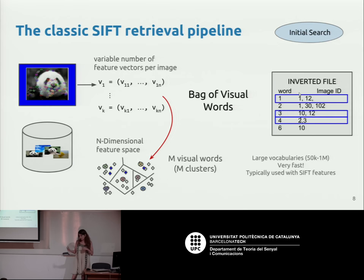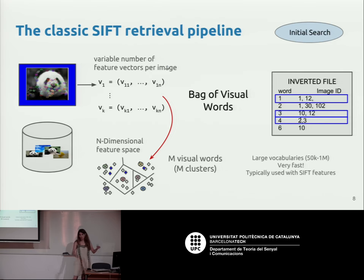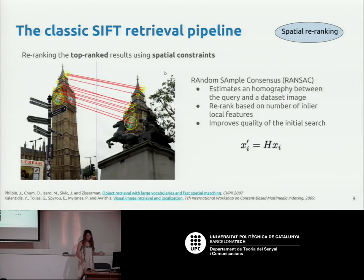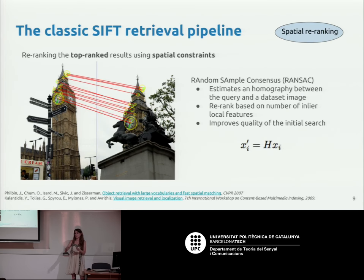You can use a structure like the inverted file to do the query fast. One issue is that when you do this aggregation from local to global representation, you totally lose spatial coherence in your image. So usually the bag of visual words is used as an initial search, and then you follow that with something more expensive. With the initial search you have filtered your dataset to the possible relevant images for your query.